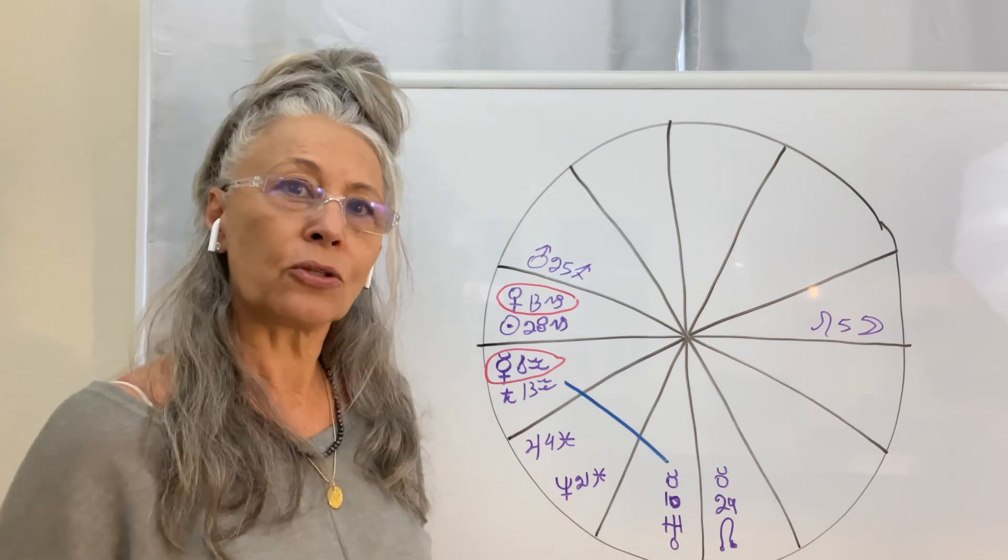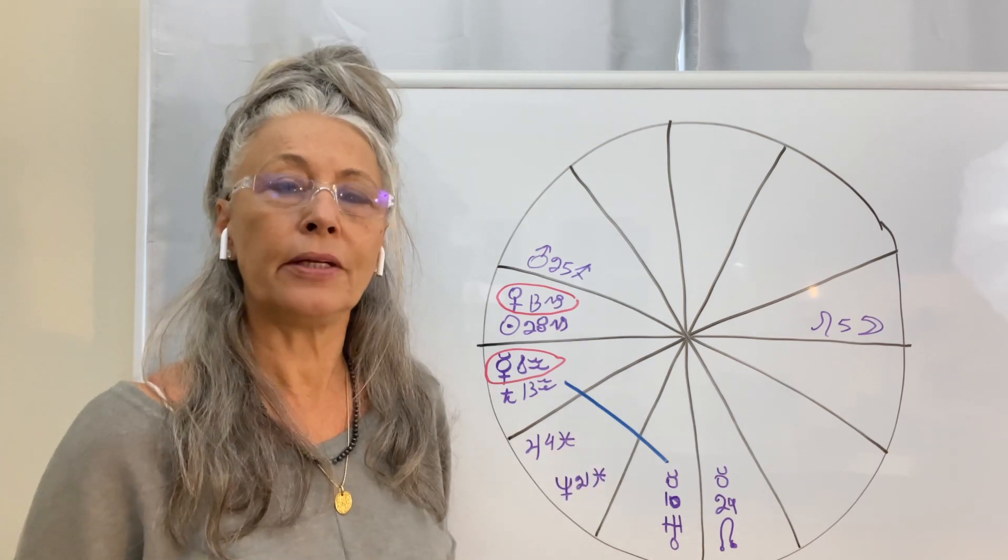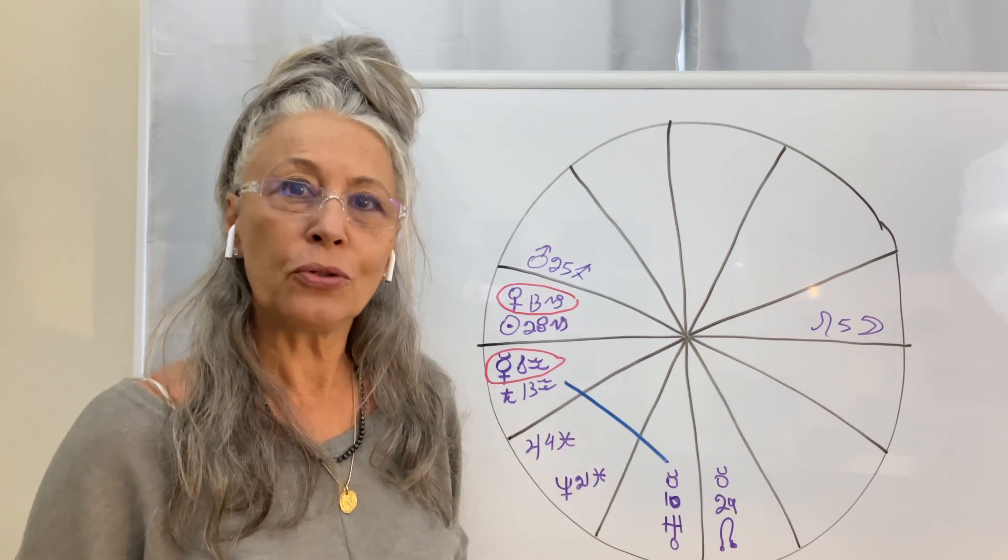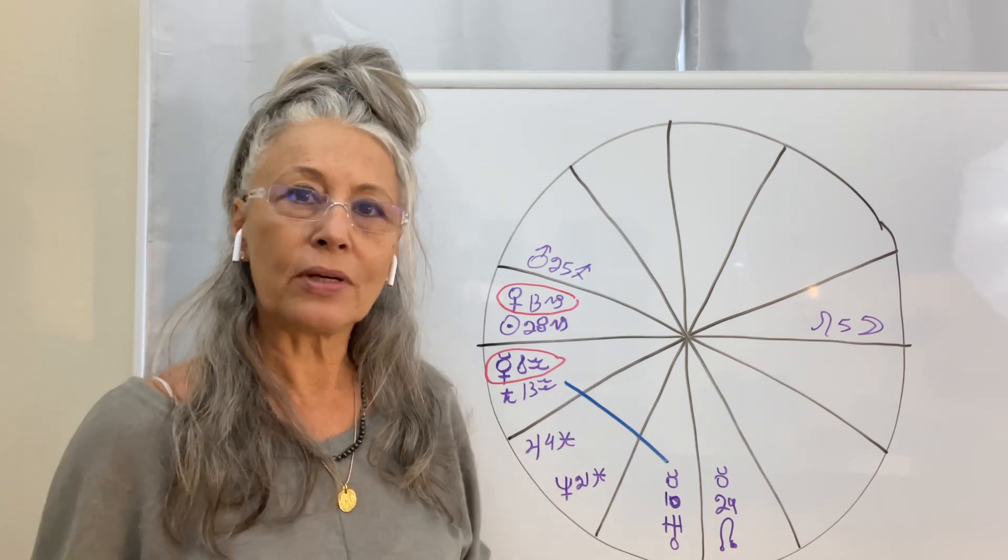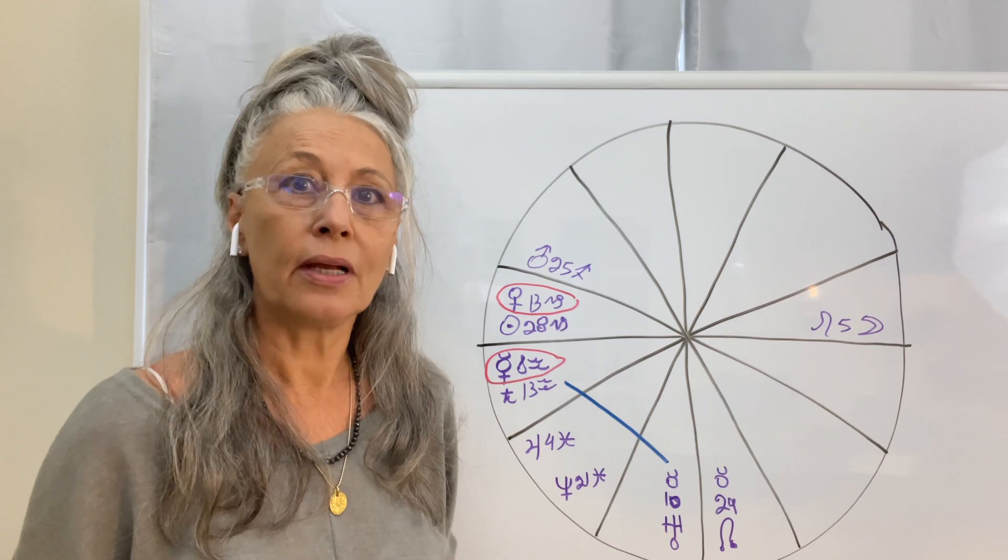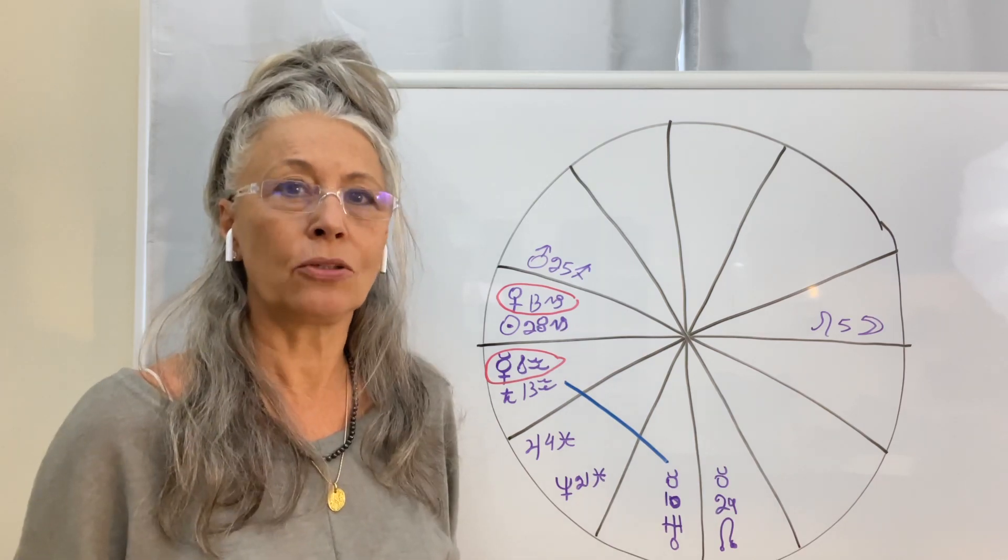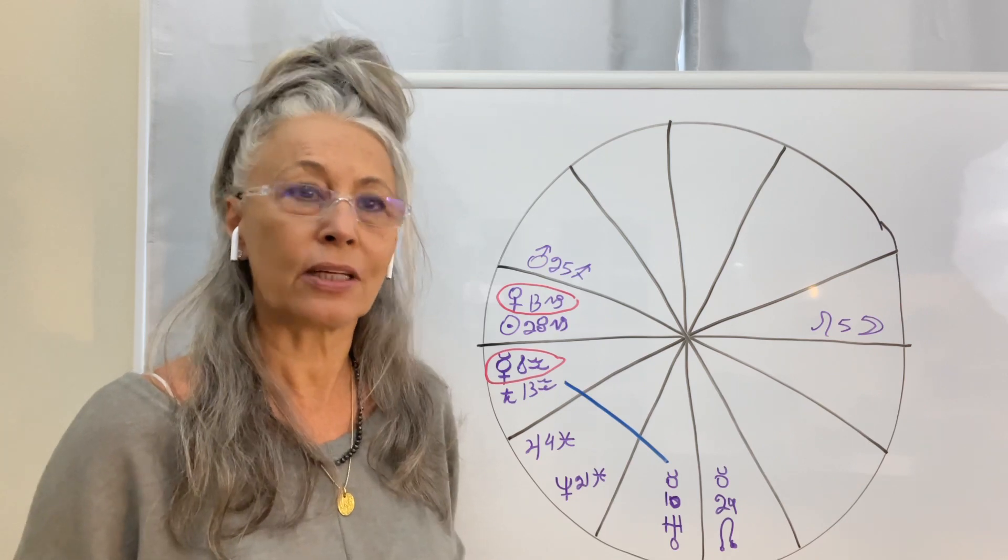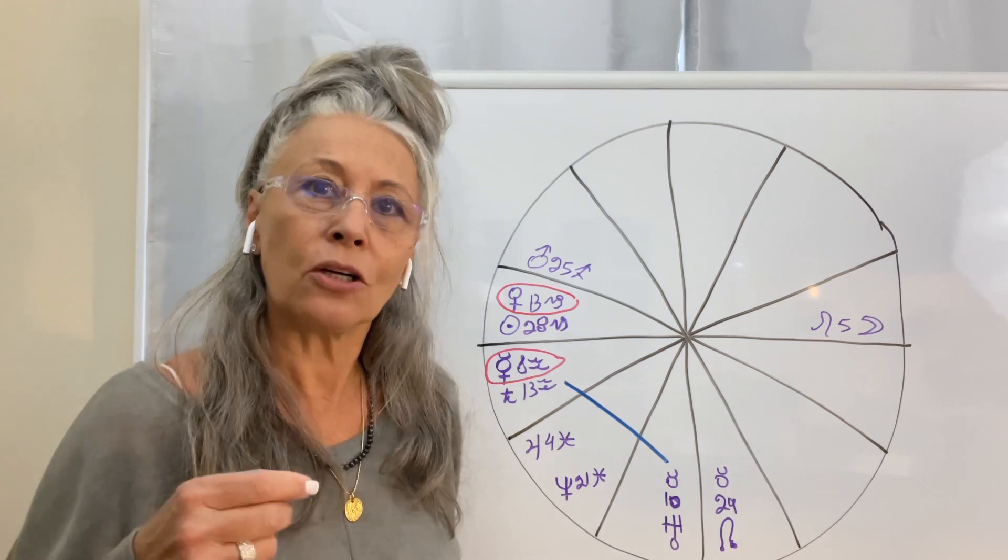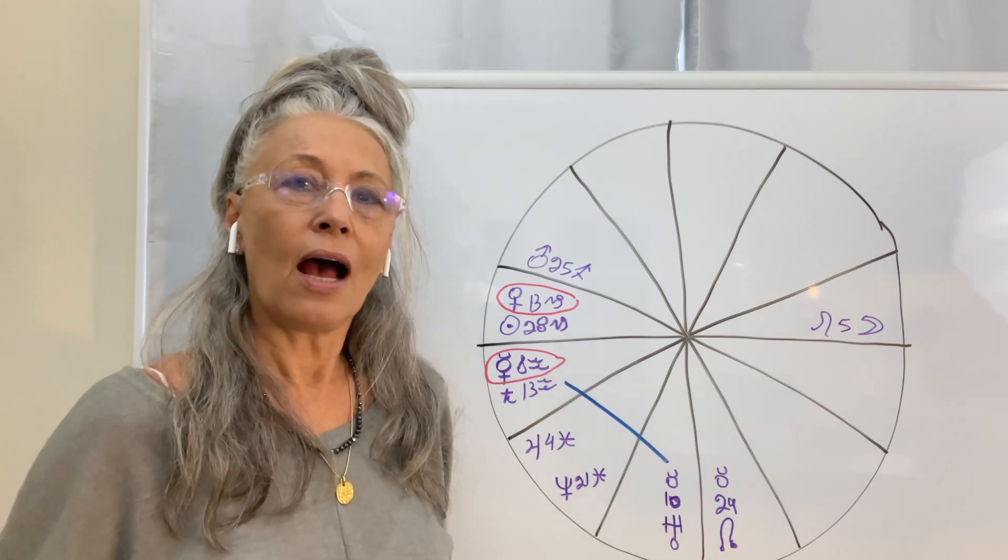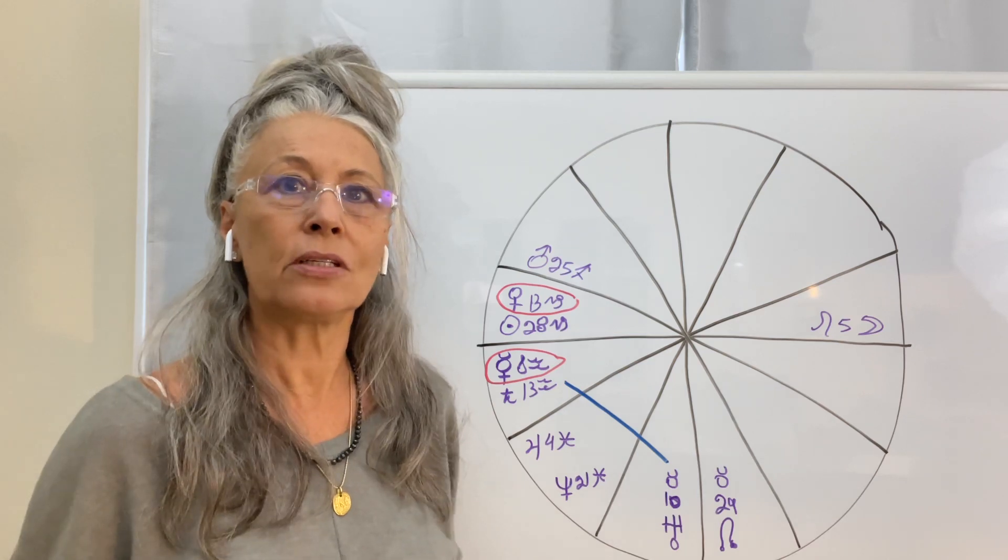So Taurus and Scorpio axis, which we're going to have the nodes transiting there for a year and a half, will give us the opportunity to clean up and heal Scorpio, any old trauma that is related to our self-worth and our ability to create financial security. Taurus wants us to have financial security. North Node went into Taurus and it urges us to see how can we create this new kind of financial security so we can create.